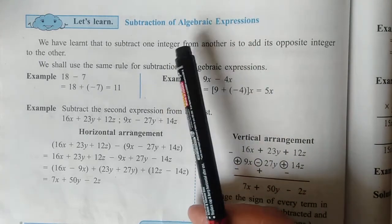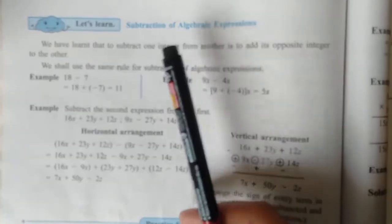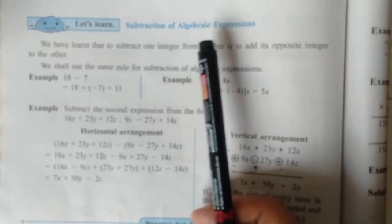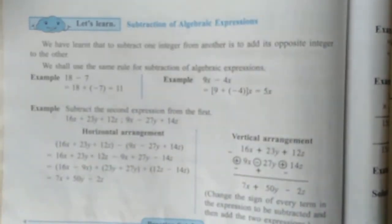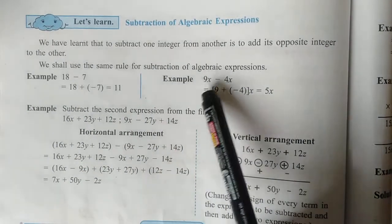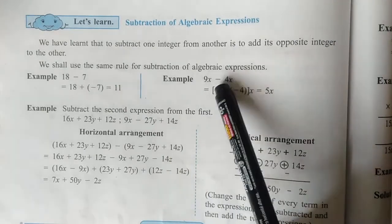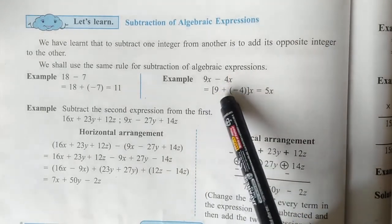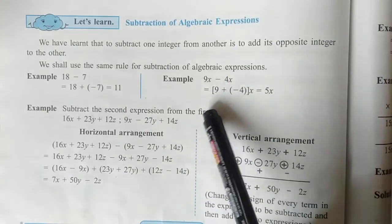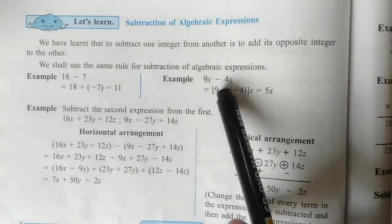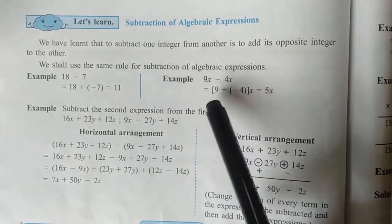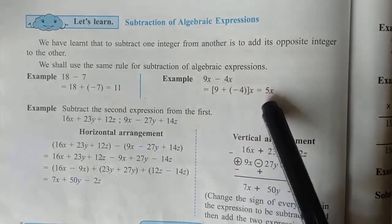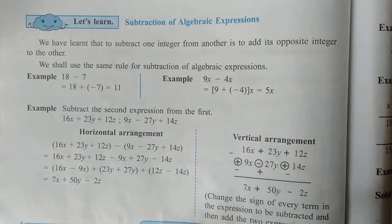In algebraic expressions, subtraction is done between only the like terms. See the example given in your textbook: 9x minus 4x. Here x is common, so 9 minus 4 gives us 5x.